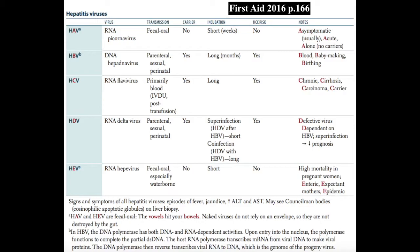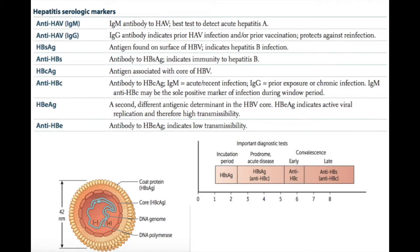To diagnose hepatitis B, we use several serologic markers. The first is the HBs or surface antigen — a coat protein. We also use the HBc core antigen, and we can see the DNA genome and DNA polymerase as well. For hepatitis A, the anti-HAV IgM antibody is the best test to detect active hepatitis A infection. The IgG form of the anti-HAV antibody is a memory antibody that indicates prior hepatitis A infection and protects against reinfection.